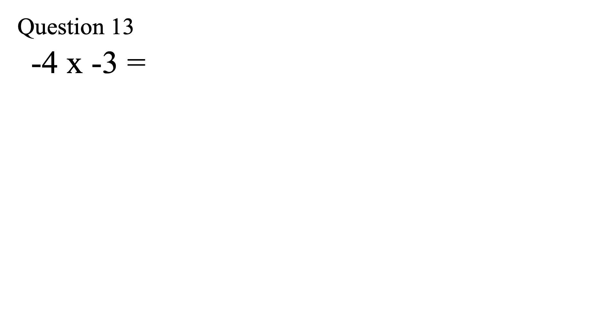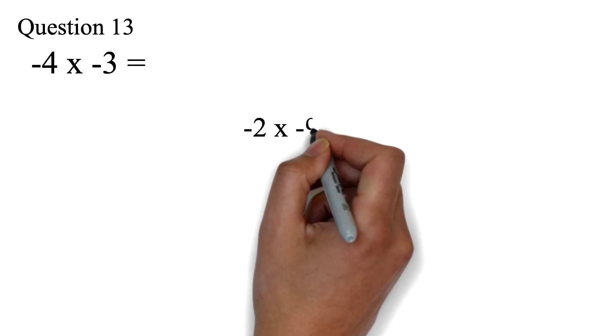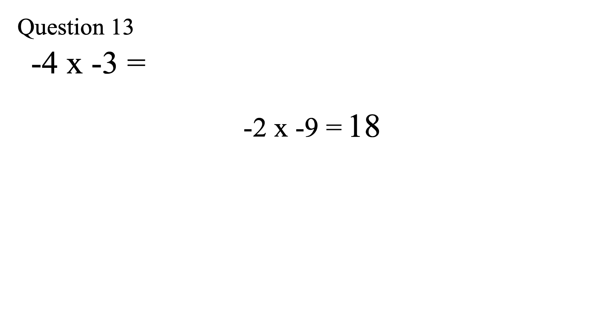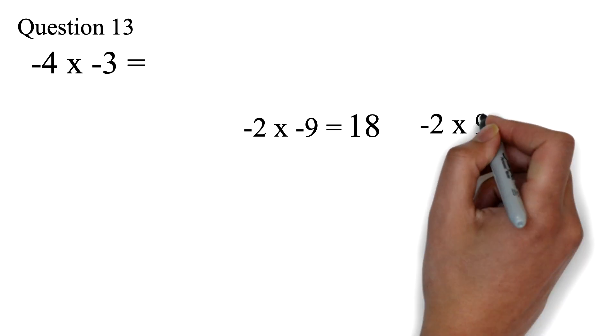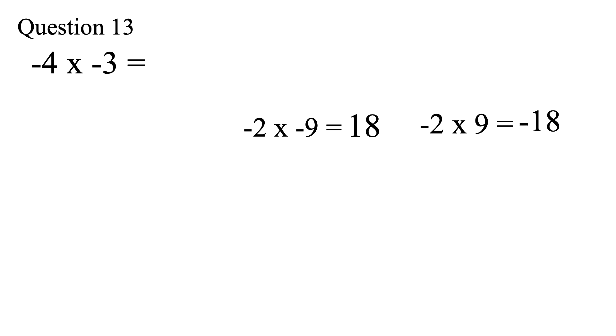Please don't confuse this with the rules of addition and subtraction. So negative 2 times negative 9 will be positive 18 because they are both negative. Negative 2 times 9 will be negative 18 because one is positive and the other is negative. Let's look at our question. So this will be positive 12 as our answer because both values are negative.